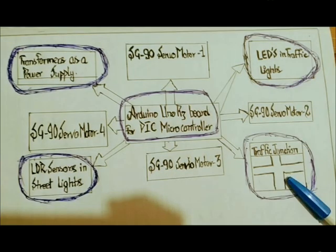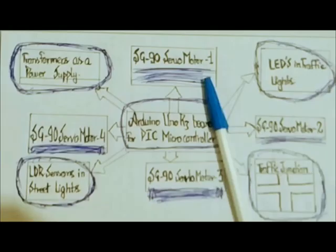Now we are using LEDs as traffic lights in a traffic junction having four lanes. We have four directions, and in those four directions we need to control the traffic lights — meaning if the traffic light in one direction is green, then in the other direction it is red.